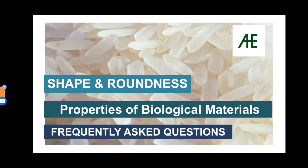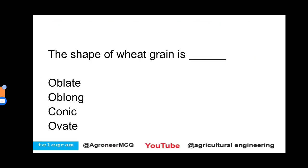Hi friends, welcome to our YouTube channel Agricultural Engineering. Today in our agricultural engineering crash course series we are going to see lecture number 29: Shape and Roundness. We are dealing with engineering properties of biological materials, and in that we are dealing with shape and roundness. So without wasting much time, let's start.